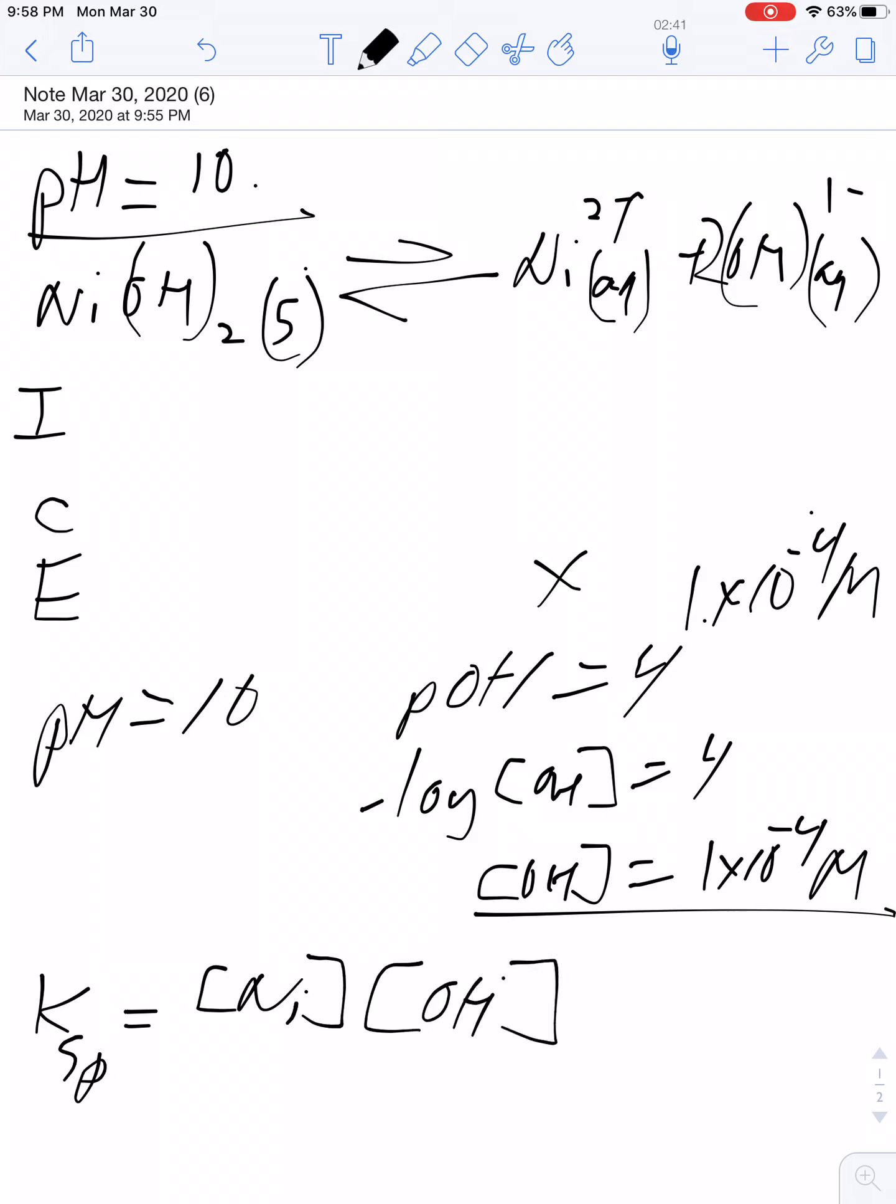Do not forget the square. The KSP of nickel hydroxide is 1.6 times 10 to the negative 16th. Concentration of nickel we don't know, let's just throw the X in there. Concentration of OH but it's squared, so then X is going to equal...